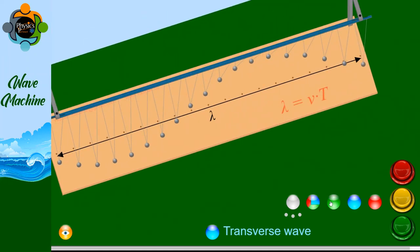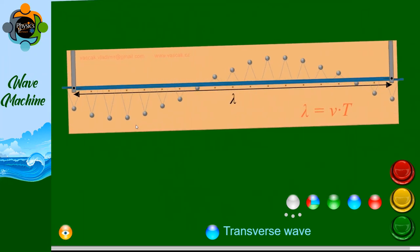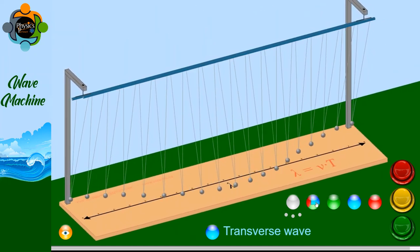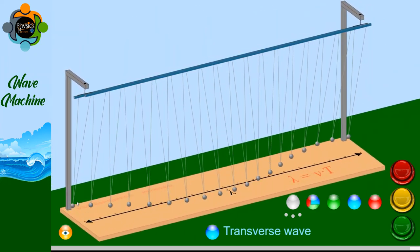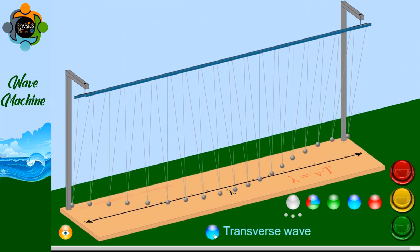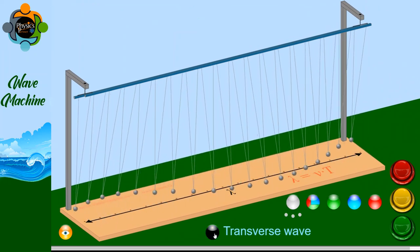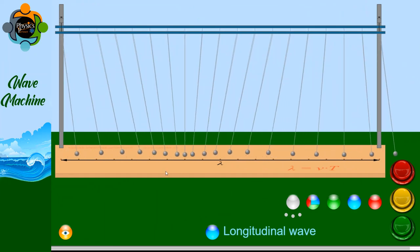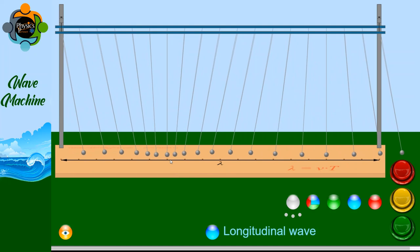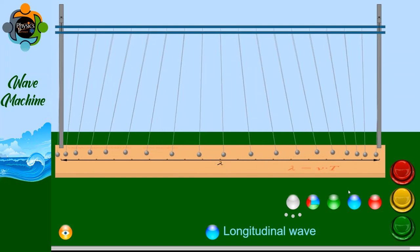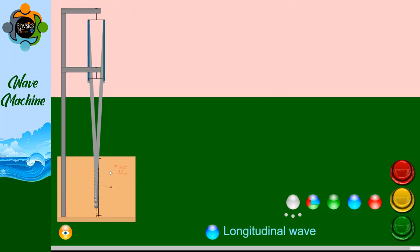From the top view, you can easily see the particles moving up and down. In the 3D form, every particle is clearly moving up and down, creating transverse waves. Now moving to longitudinal waves — instead of moving up and down, the particles move back and forth, parallel to the direction of wave propagation.